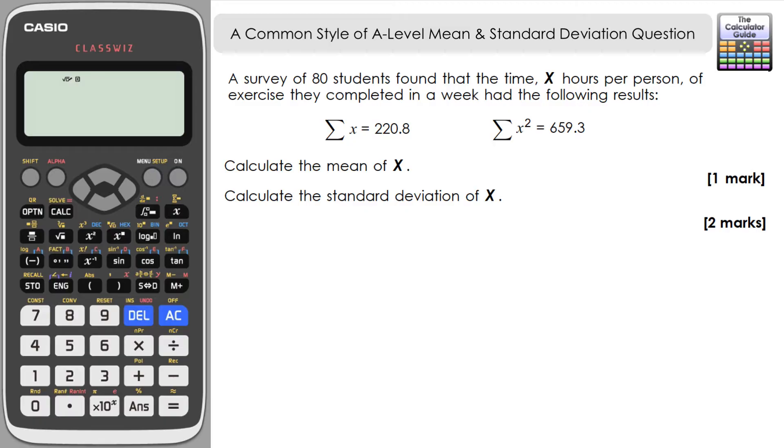Unfortunately there isn't a way to input pre-prepared summary statistics into the statistics mode of the ClassWiz and then be able to work out other information. Perhaps that's the reason for setting this style of question more commonly - checking that you have some understanding of how to actually calculate the mean and standard deviation rather than just inputting data into your calculator and getting the figures back.